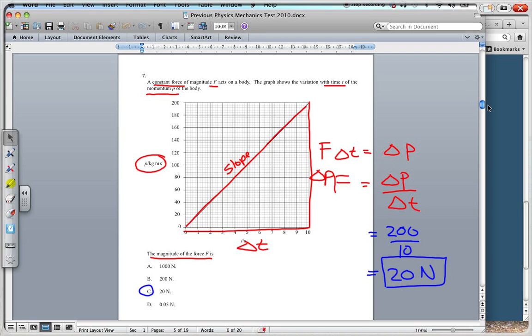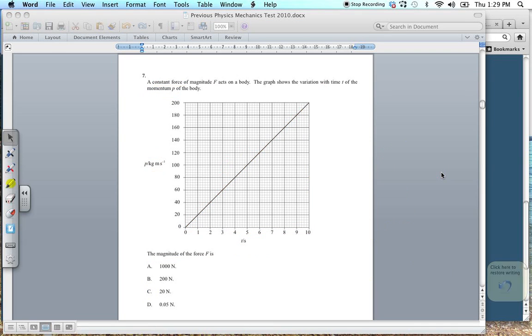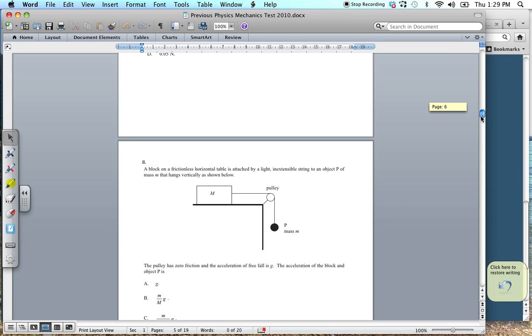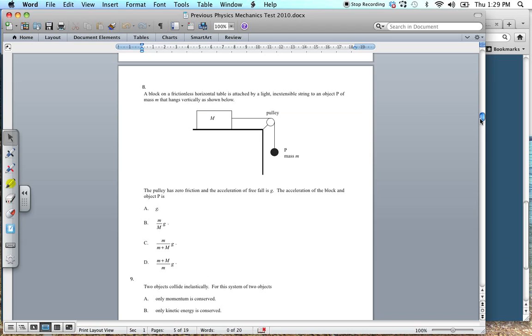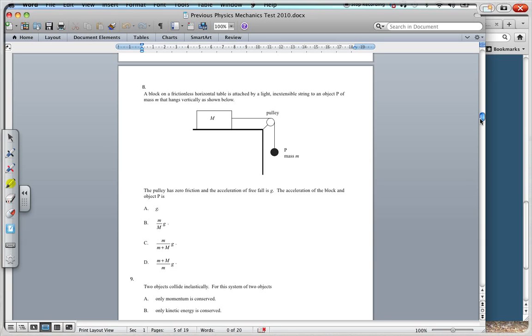Fine. Going on to the next one here. Going on to H. Alright. Looking at this, we have a block on a frictionless horizontal table is attached by a light, inextensible string. As I've said before, that means it doesn't stretch to an object P of mass M that hangs vertically as shown below. The pulley is zero friction and the acceleration is 3/4 G. The acceleration of the block of the object P is. Alright. So, what is that going to be? Well,